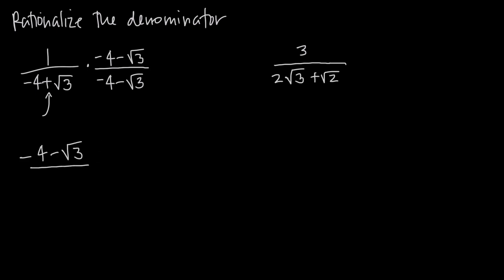In our denominator, we have to think about this as two binomial terms that we're multiplying together, and we're going to FOIL this out. Multiplying the first two terms, negative 4 times negative 4 gives us positive 16. Negative 4 times negative root 3 gives us positive 4 root 3 — those two negative signs cancel. Then we have positive root 3 times negative 4, so we're going to get minus 4 root 3.